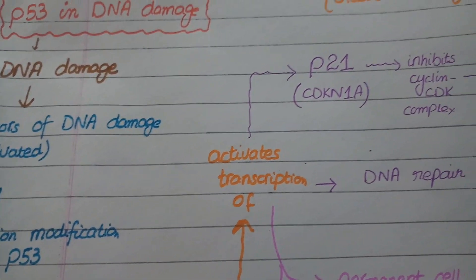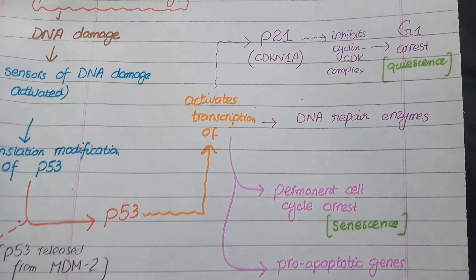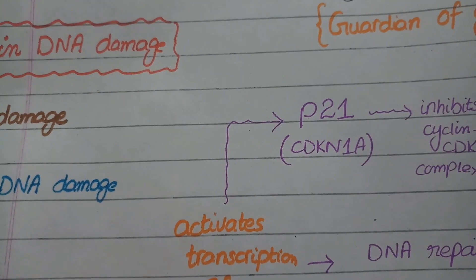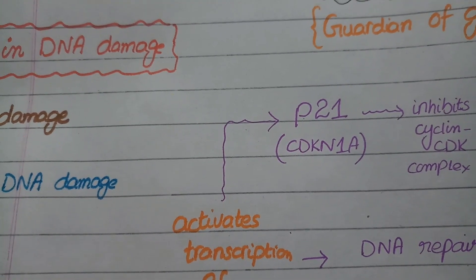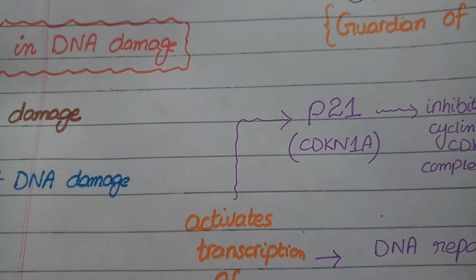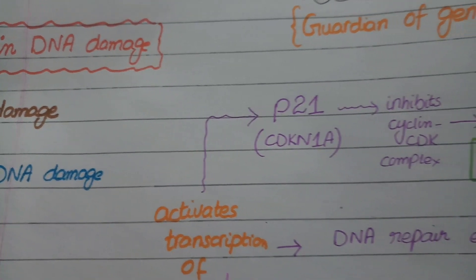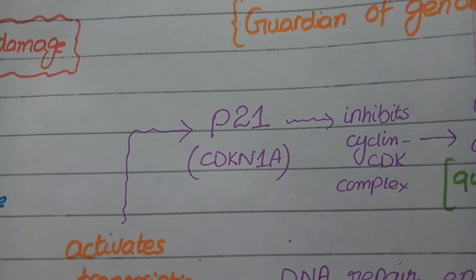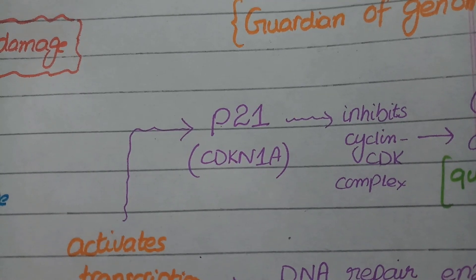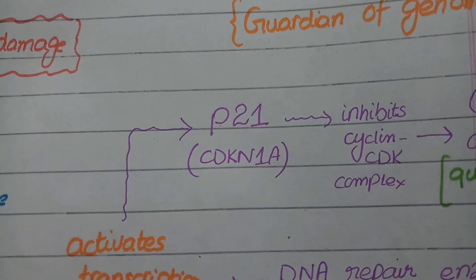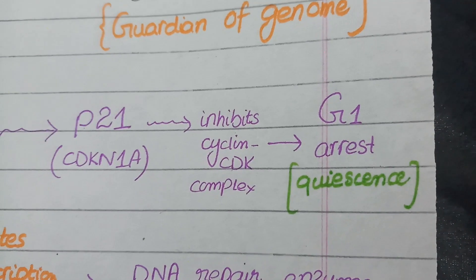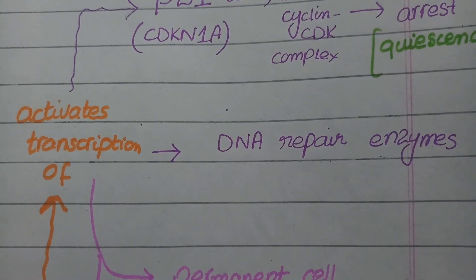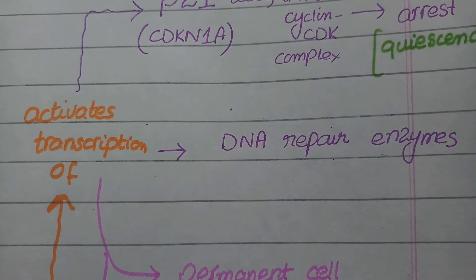As already discussed, the first strategy of p53 is to stop the cell cycle temporarily. For this purpose, p53 induces transcription of a protein p21, also known as CDKN1A. This p21 protein binds with cyclin-CDK complexes that would otherwise promote the cell cycle from G1 phase to S phase. Because p21 is inhibiting these complexes, the cell cycle is arrested at G1 phase — this temporary arrest is called quiescence. Secondly, p53 also causes transcription of DNA repair enzymes so they can work to correct the DNA damage.